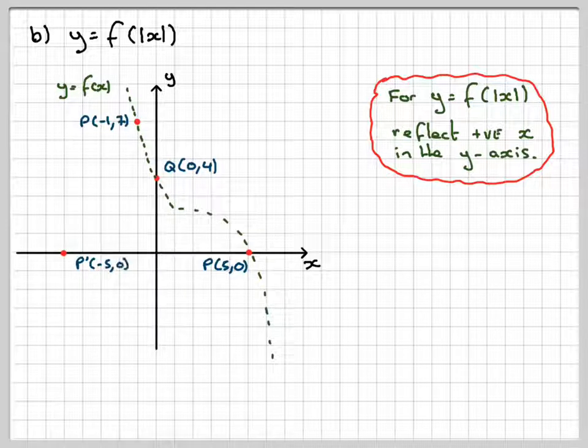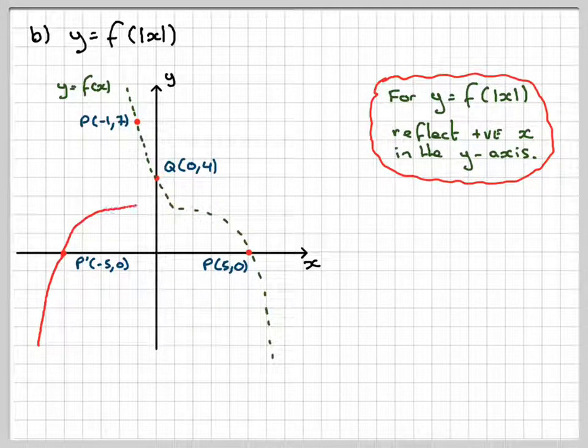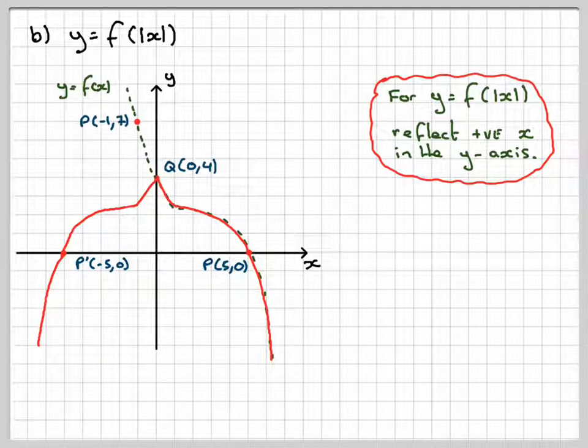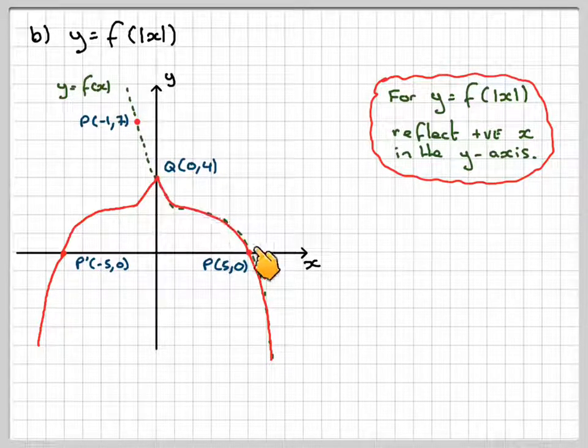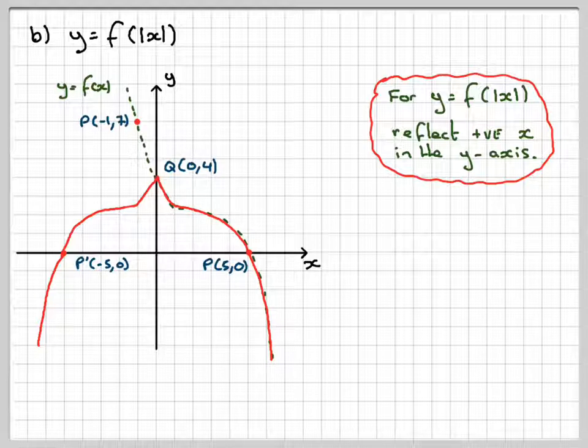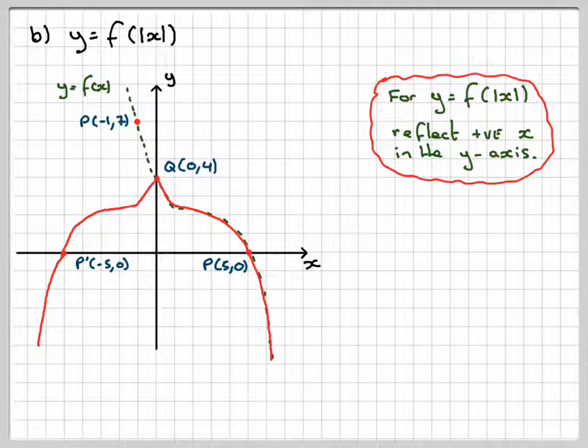We need to mark on the point minus 5, 0, because it goes through here 5, 0. This point will stay put, and therefore my graph will look like that. So anything that is positive x gets reflected in the y-axis. And that's how we get the graph of f of absolute value of x.